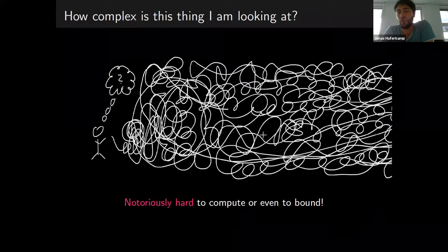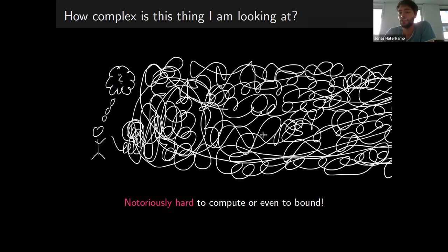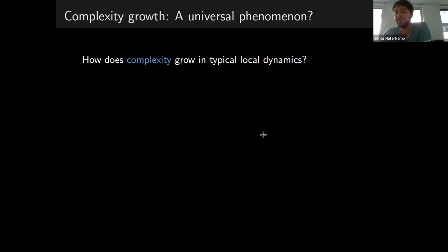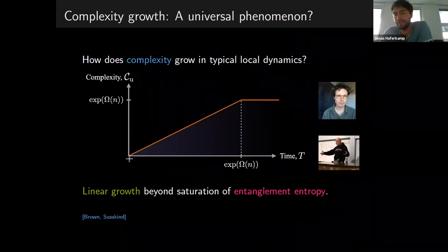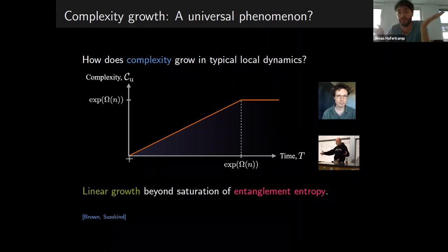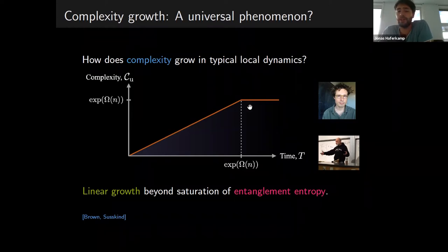The talk is going to be about what we can expect from typical systems. Would we expect complexity to be something we basically never see? Is essentially everything not complex, existing only in fine-tuned systems? Or is it something that generically surrounds us? Lucky for me and my co-authors, there's already a conjecture in the literature that captures what people believe about the behavior of complexity in typical interacting systems. This conjecture is due to Brown and Susskind, and what they said should be the case is that the quantum circuit complexity grows at a linear pace for an exponentially long time until it saturates.